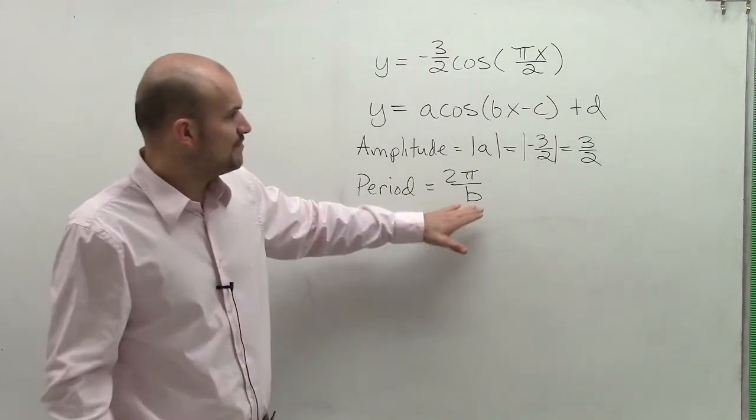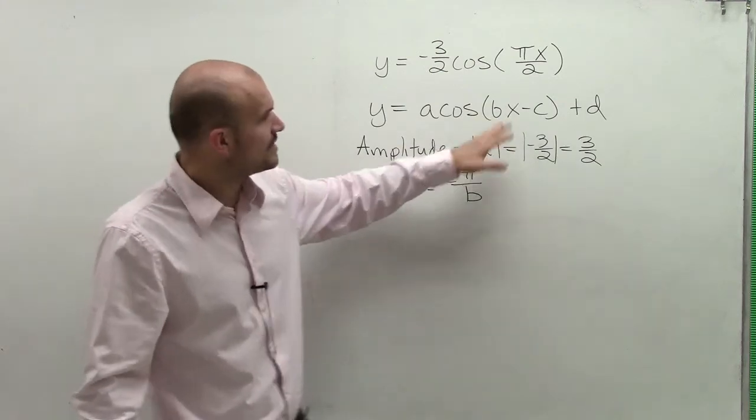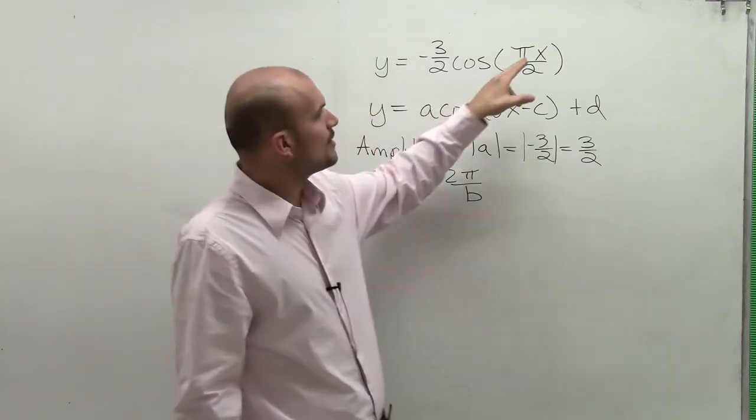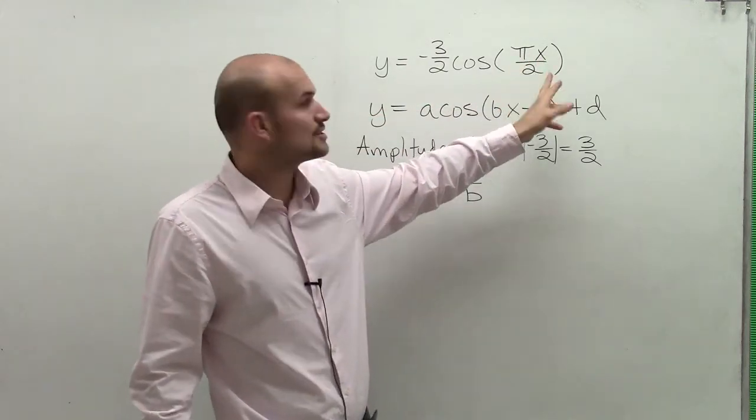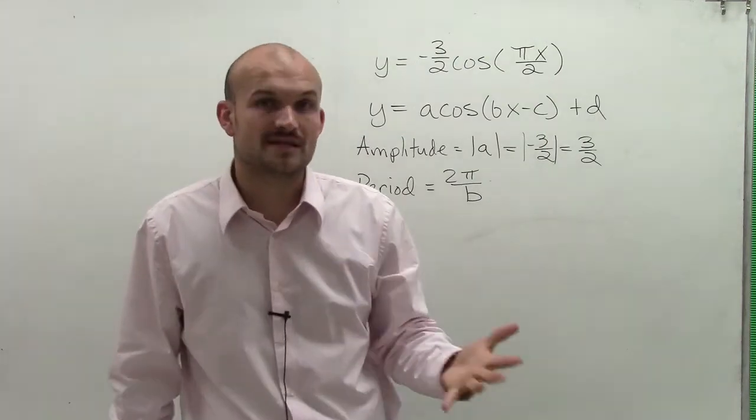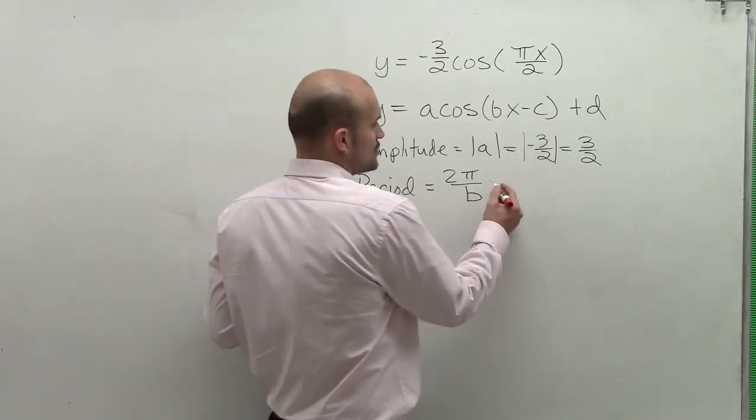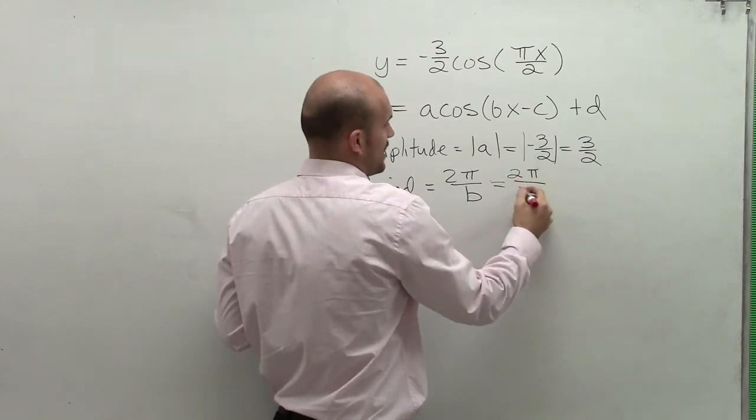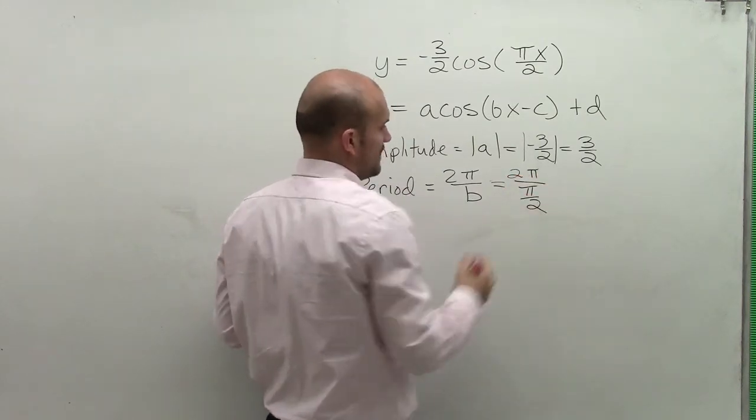We always look at b, which is our coefficient of x. Now, it gets a lot of students when they look at this and they say, well, the coefficient of this x is pi. But you've got to remember, that's not pi. That's actually pi being divided by 2. So we have to include that division of 2 into our problem. Our b is actually 2 pi divided by pi divided by 2.